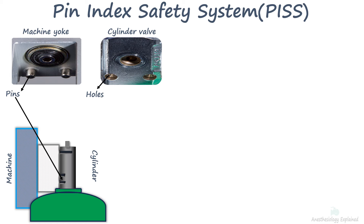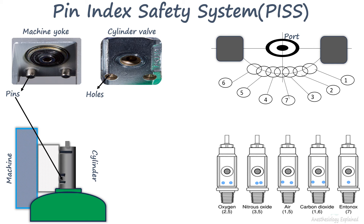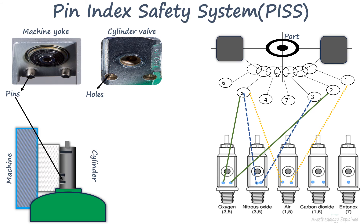The positioning of the holes utilizes an arc of a circle centered around the port, with seven hole positions equally spaced along it. Various combinations of these holes are chosen for different gases, and the corresponding pins on the hanger yoke are precisely designed to fit into these holes. For example, oxygen is identified by the pin index of 2 and 5, nitrous oxide by 3 and 5, and medical air by 1 and 5. Entonox is distinguished by having only the hole numbered 7, which aligns vertically beneath the center of the port.